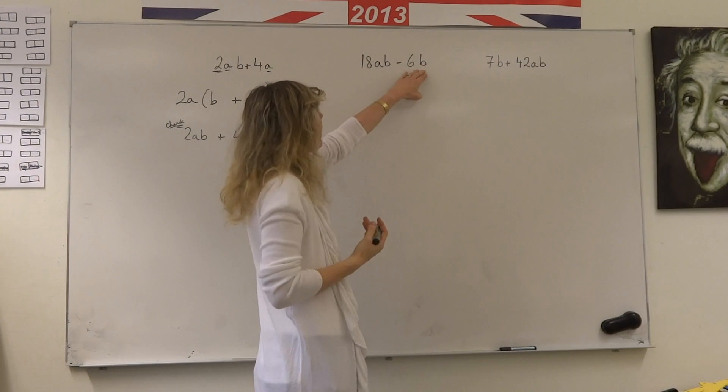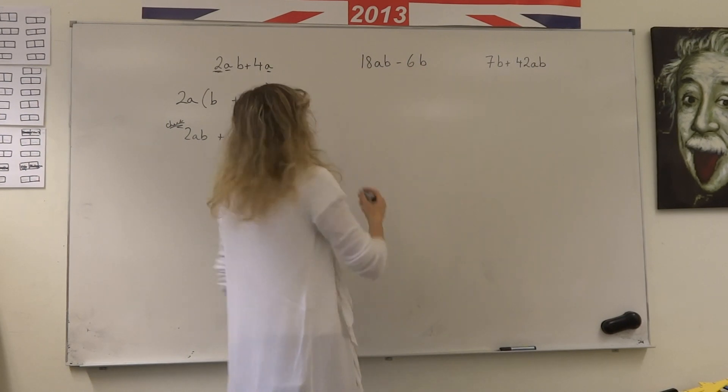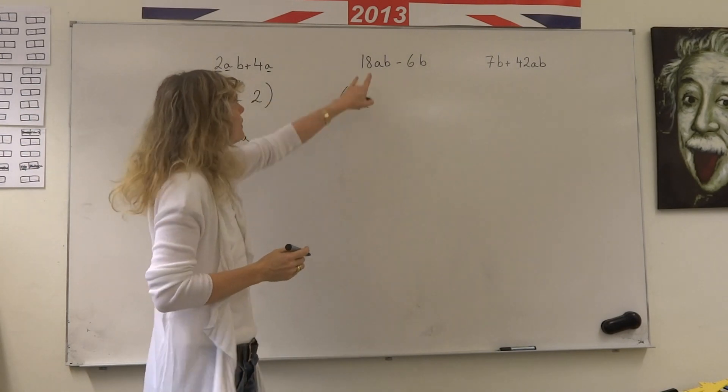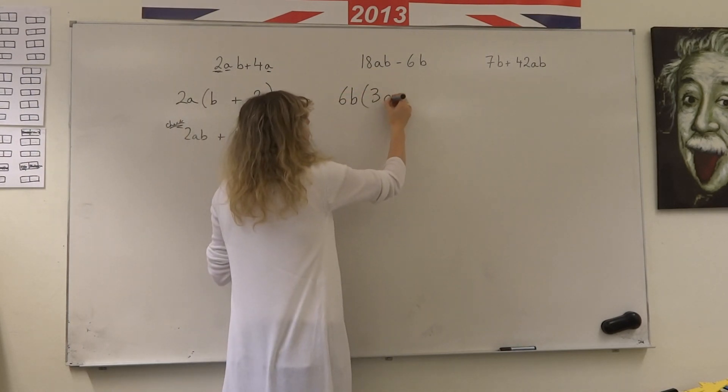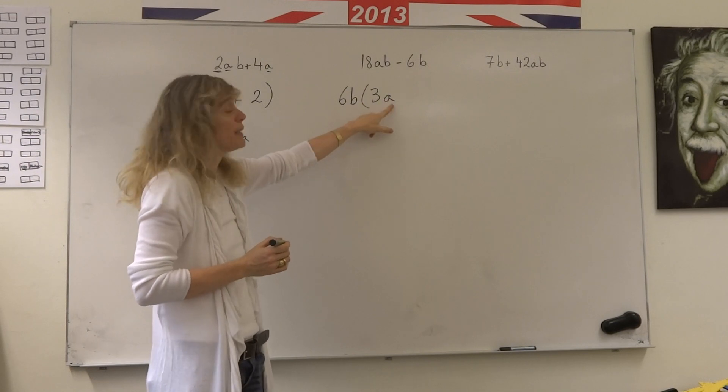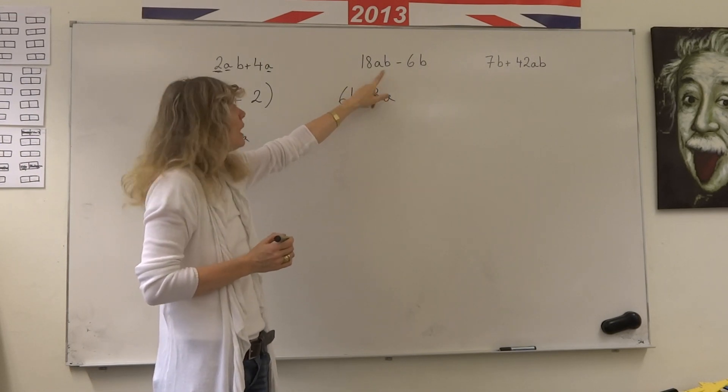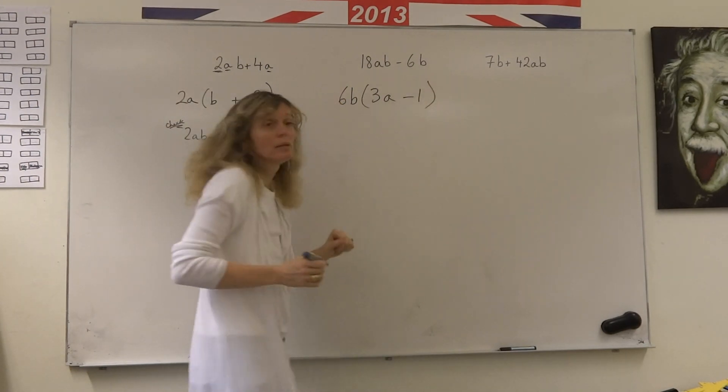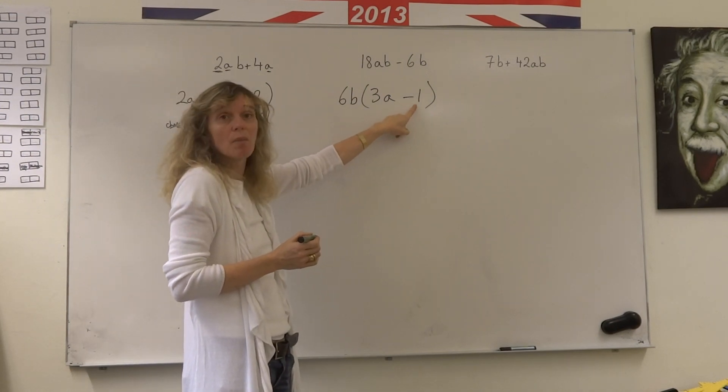In this one, what if I could take out 6B here? The whole of 6B out front. Could I do that? Yes. Because if I multiply 6B by 3 lots of A, 6 times 3 is 18, A times B is AB. That would give me 18AB. If I multiply 6B by minus 1, I would get 6B times minus 1 is minus 6B.